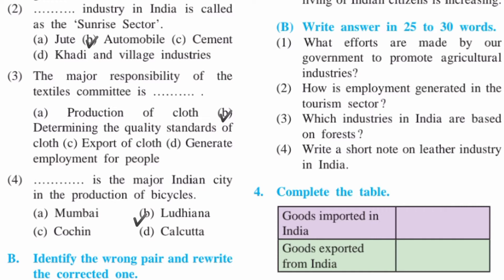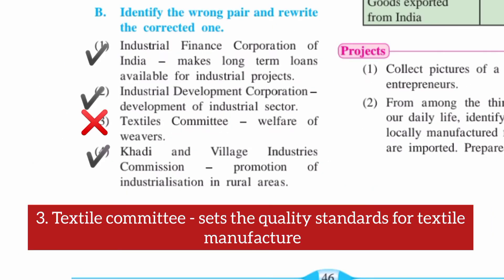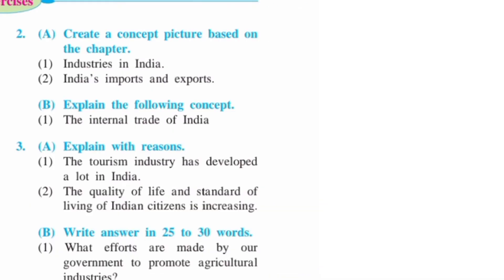Question B: Identify the wrong pair and rewrite the correct ones. The first and second pairs are right. The third one is wrong — Textile Committee, welfare of weavers — that is wrong. The answer is: Textile Committee sets the quality standard for textile manufacture. The fourth one is also right.